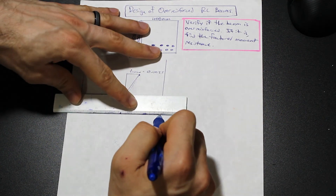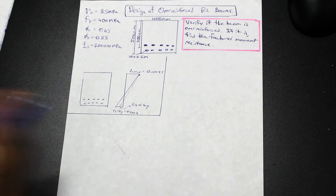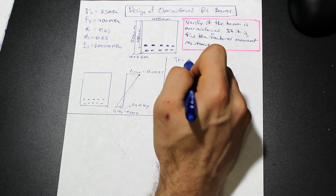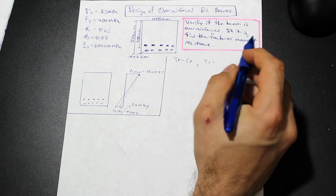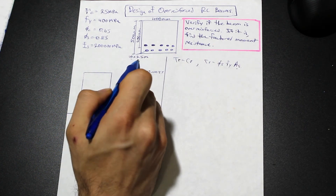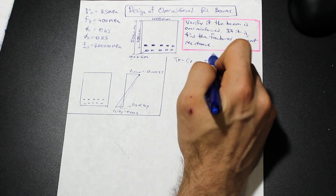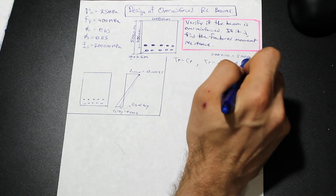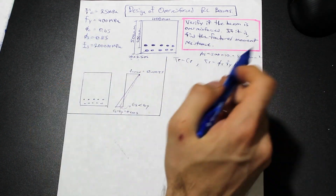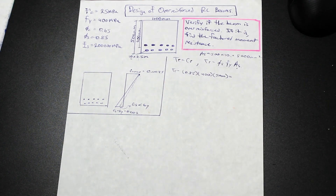So let's begin the question. We need to consider it as balanced, find the strain in the steel, and check if it's close to the yield strain. In the balanced condition, we assume the tensional force equals the compressional force. Tr equals φ_s · fy · As. We have 10 25M bars; 25M bars are 500 mm² each, so As = 5000 mm². φ_s is 0.85 and fy is 400 MPa.